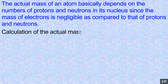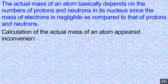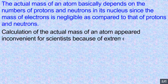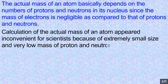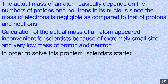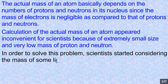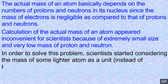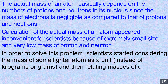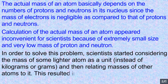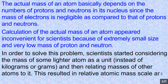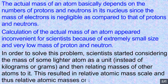Calculation of the actual mass of an atom appeared inconvenient for scientists because of the extremely small size and very low mass of protons and neutrons. In order to solve this problem, scientists started considering the mass of some lighter atom as a unit instead of kilograms or grams, and then relating masses of other atoms to it. This resulted in the relative atomic mass scale and thus relative atomic masses, or atomic weights.